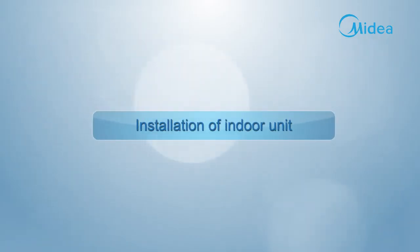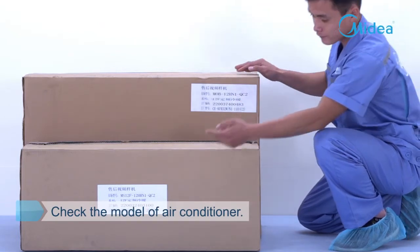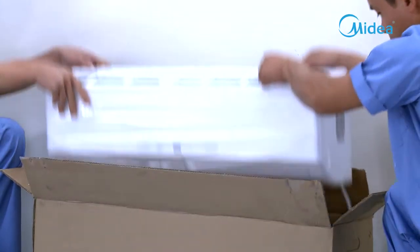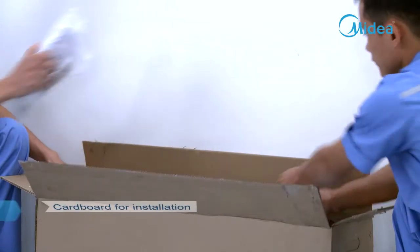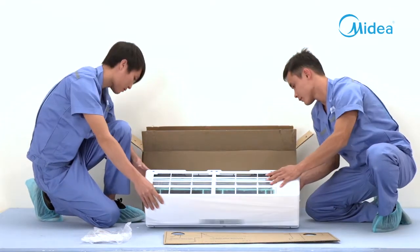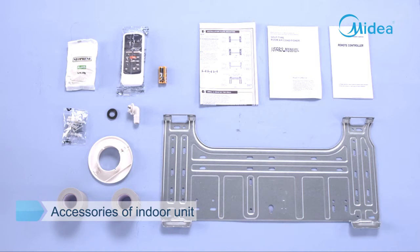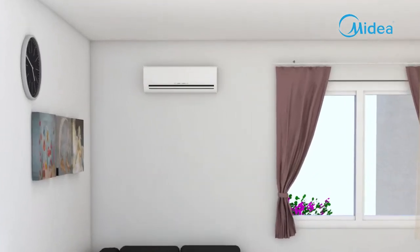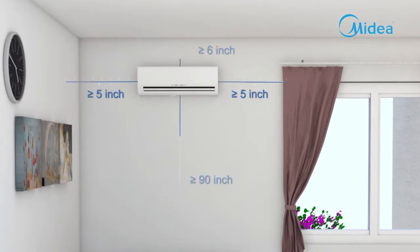Installation of indoor unit. Confirm whether the indoor unit matches the outdoor unit according to the product model. Unpack the packaging box, take out the indoor unit, and examine whether there is any scratch, deformation, or other defects on the panel. Take out the cardboard for installation and check whether all accessories are complete. Space requirements: the right and left sides of the indoor unit should be more than 5 inches from the wall, the upper side more than 6 inches from the ceiling, and the lower side more than 90 inches from the ground.